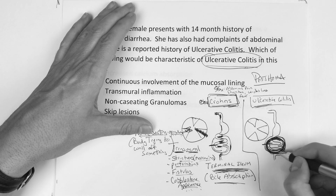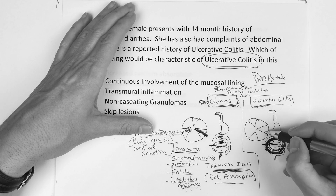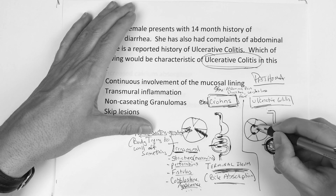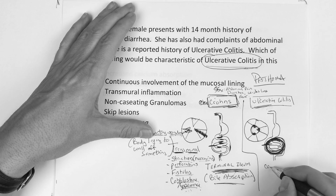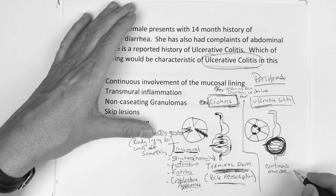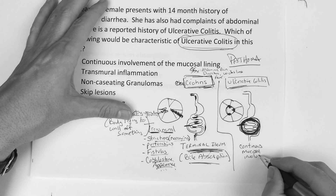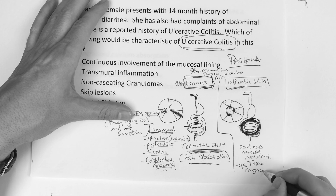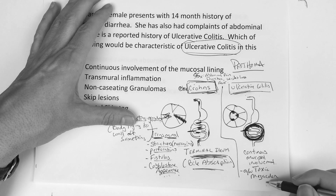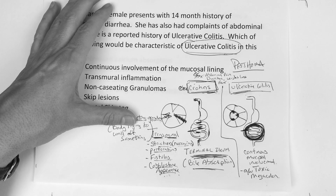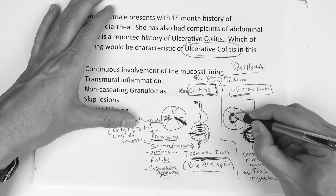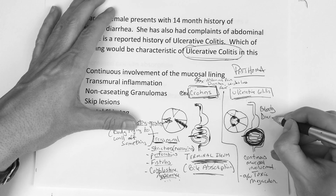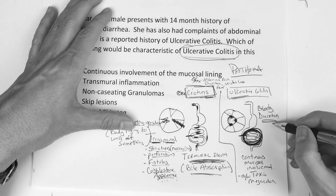Now over to ulcerative colitis — it's in the bowel, but if we look at a cross-section, the inflammation is only at the tips, the mucosal surface. Because it's at the tips all the way through the bowel, that's why they call it continuous mucosal involvement. This is associated with toxic megacolon, which can cause decreased blood pressure and shock. The inflammation affects the blood vessels, which is why you're really going to get bloody diarrhea with ulcerative colitis.